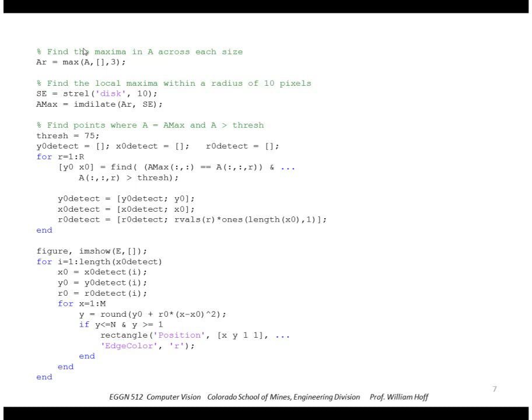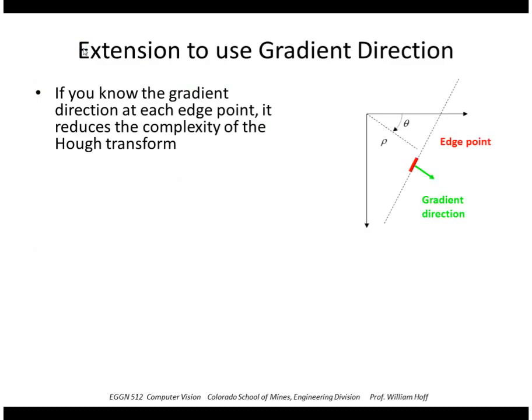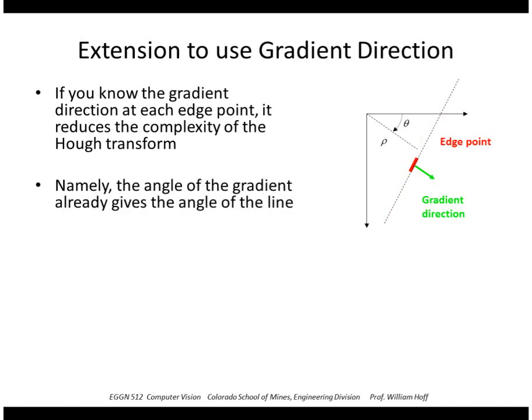Okay, finally a method to reduce the complexity of the Hough transform is to use the gradient direction of edge points. So in the case of lines, knowing the gradient direction means that the line that edge point lies on must be perpendicular to that direction. So we don't need to search over the angle direction. We already know the angle direction.